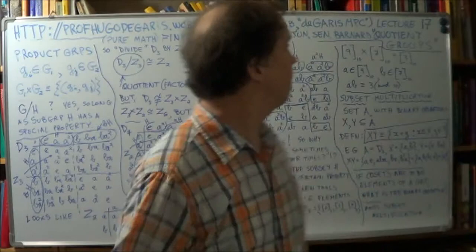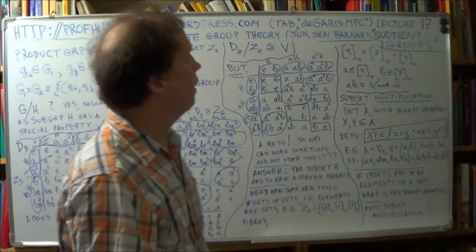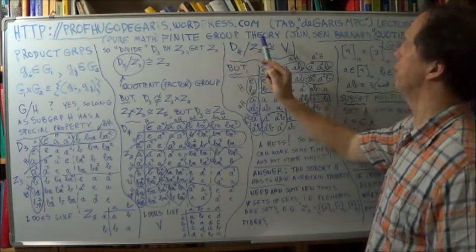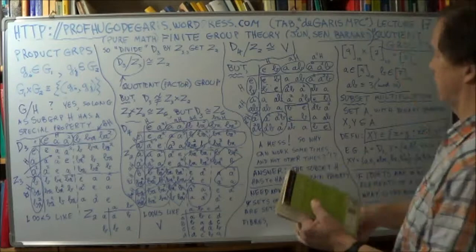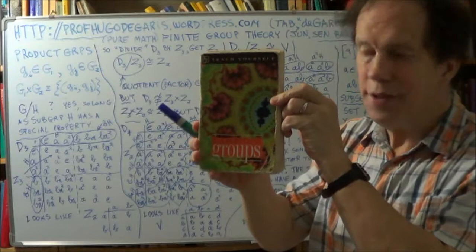This is lecture 17, called Quotient Groups or Factor Groups, and it's part of a pure mathematics course on finite group theory at junior and senior level. The first author is Barnard, and here's the text that I've been using throughout this course, or lecture sets.